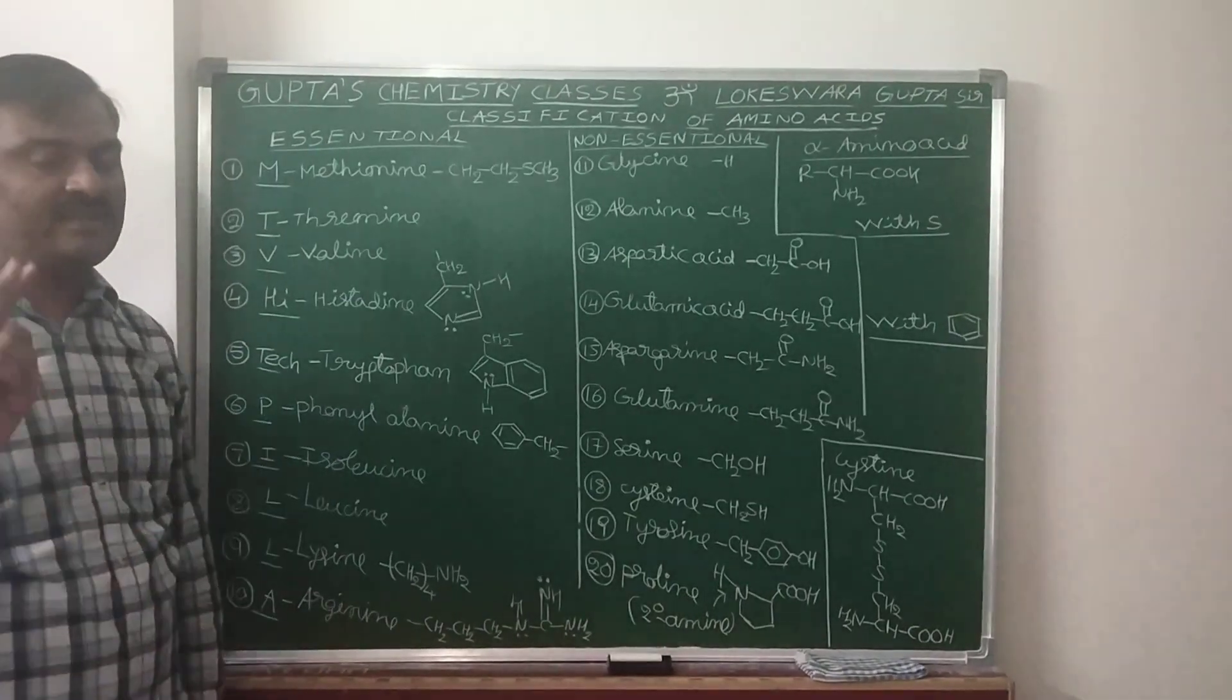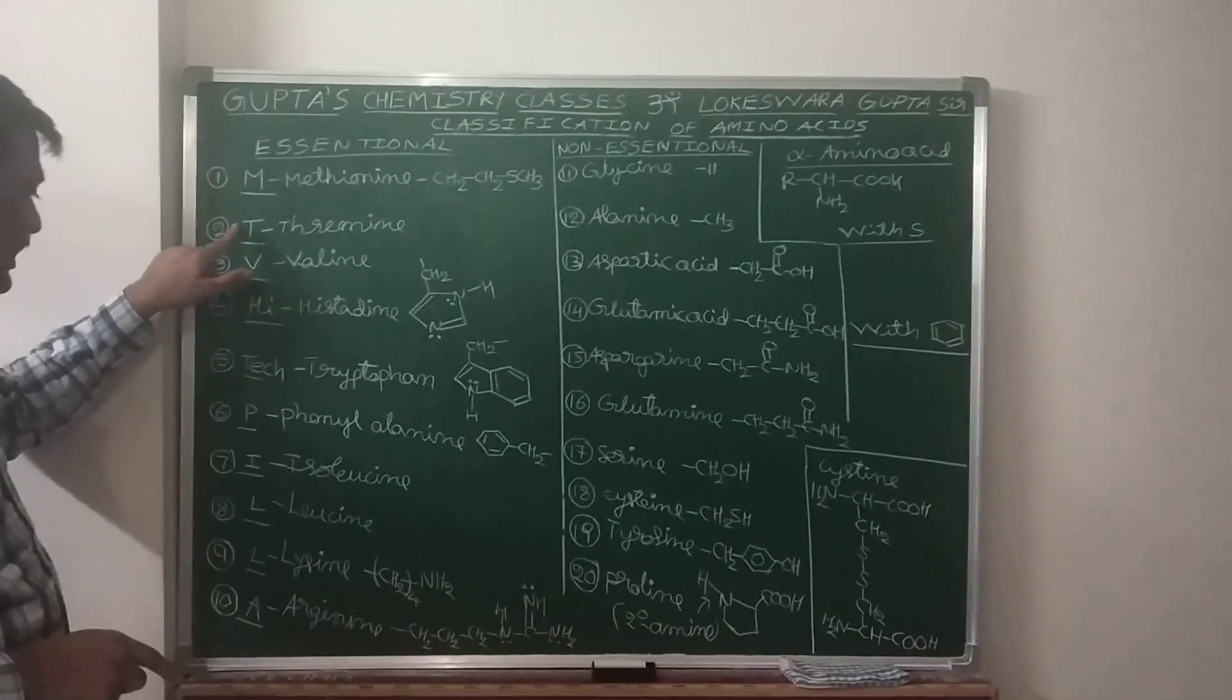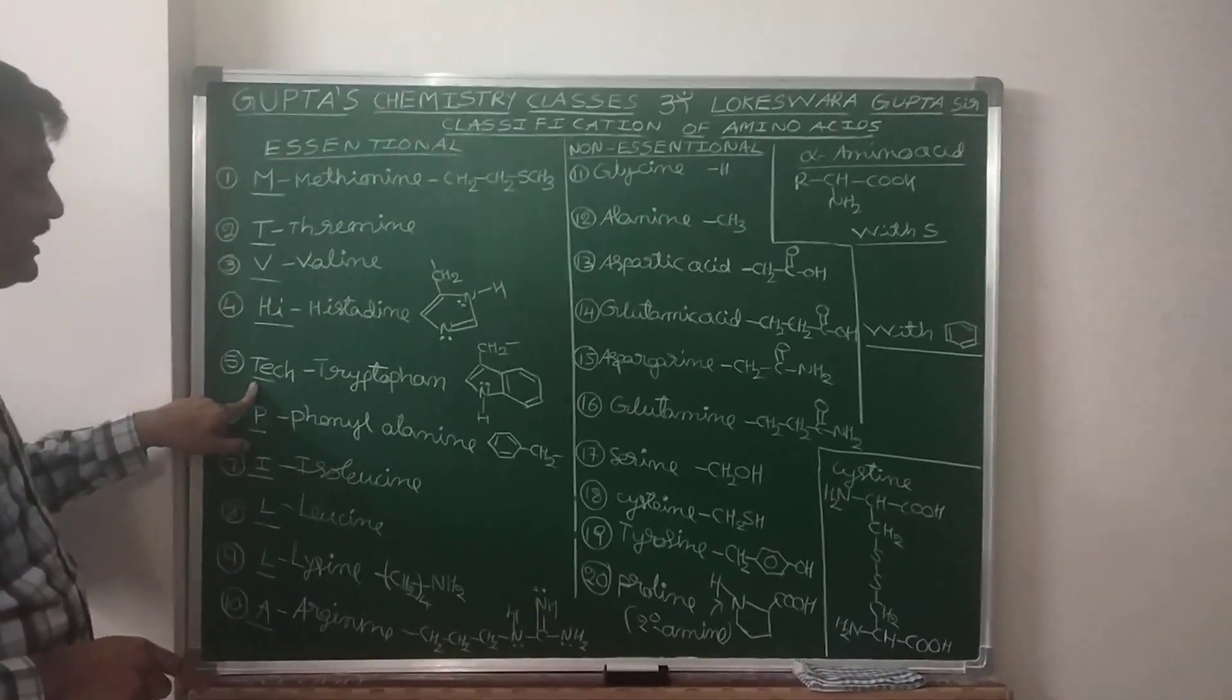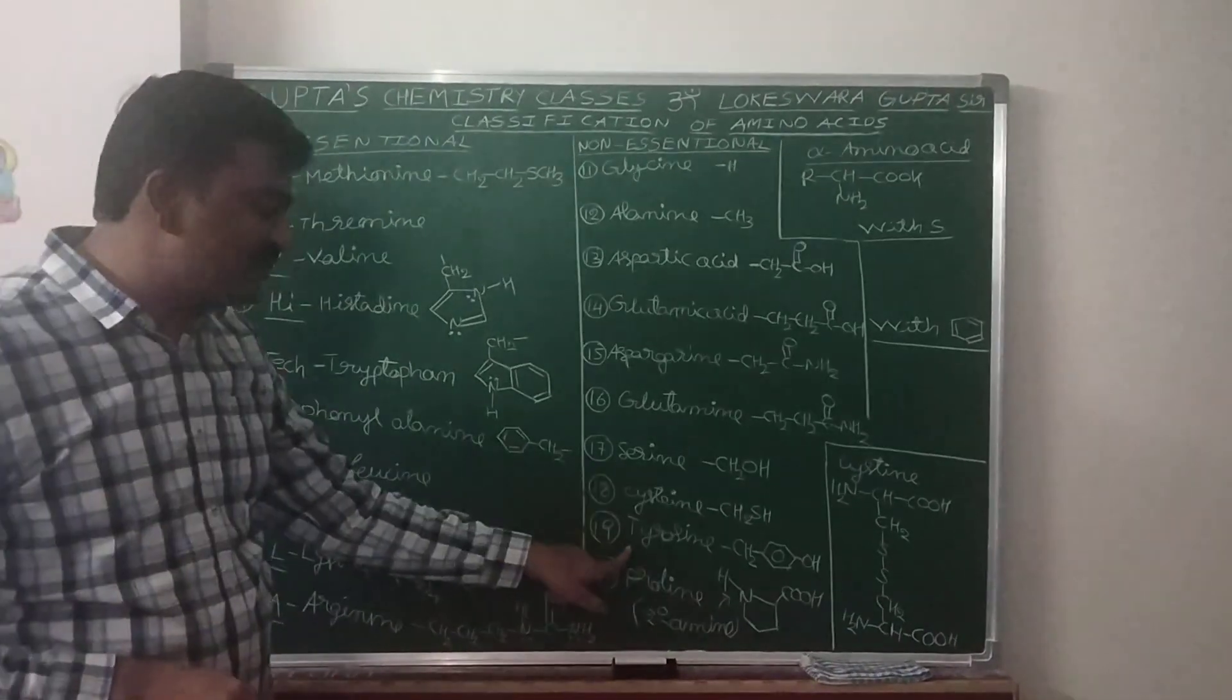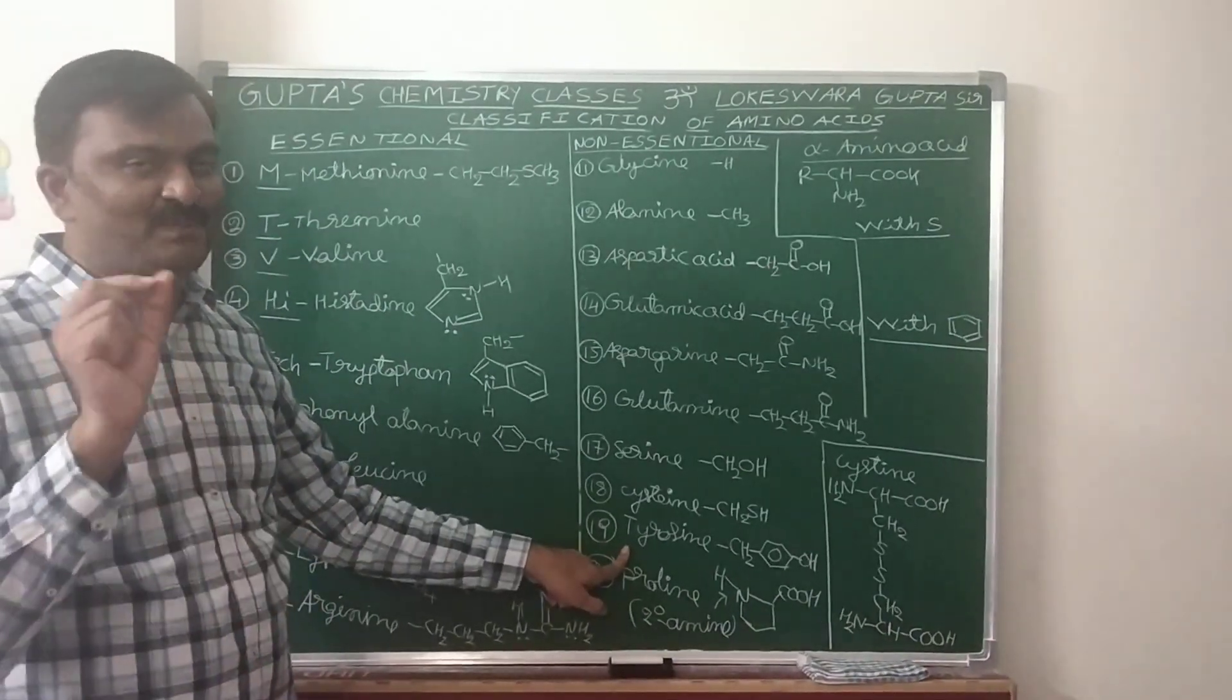There are more than 2 amino acids starting with letter T. Threonine, Tryptophan, another one is Tyrosine. But tyrosine is not essential, it's non-essential. This point you have to remember.